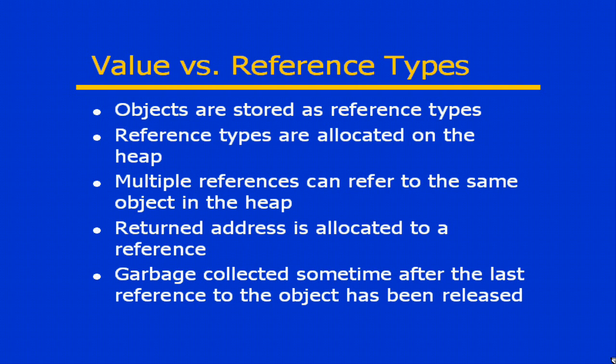On the other hand, objects are basically reference types. Reference types, rather than being allocated on the stack, they're allocated on the heap. In other words, we have references that point over to those objects that are actually sitting on the heap.